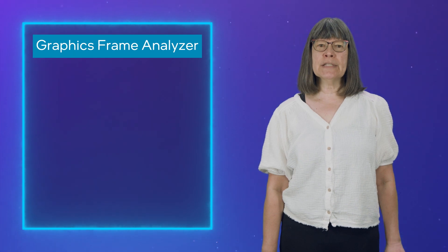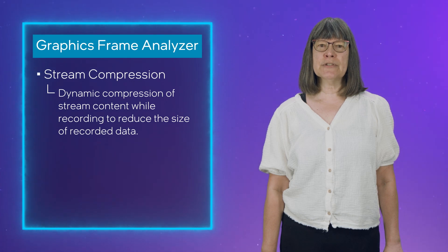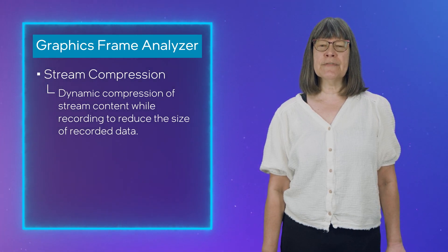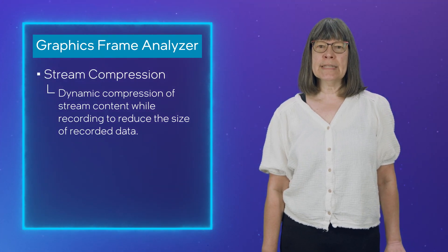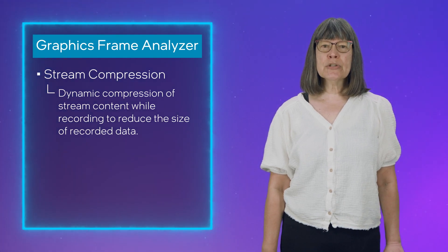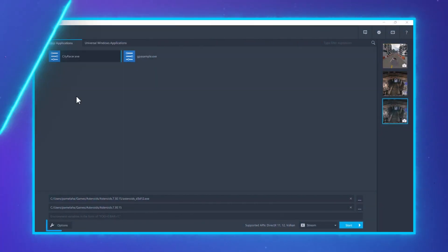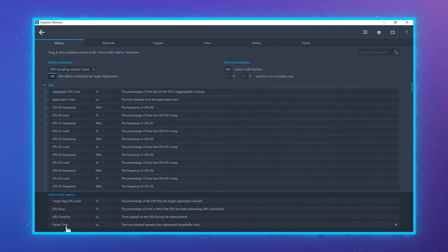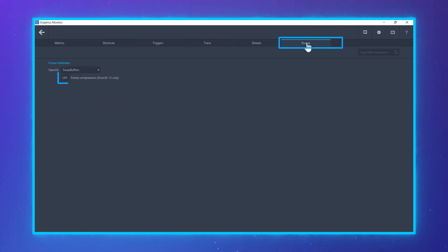For our first Graphics Frame Analyzer highlight, we have stream compression. Stream compression allows dynamic compression of stream content while recording to reduce the size of the recorded data, allowing you to save disk space. Be aware that in some cases compression during capture may reduce application frame rate, so that smaller stream size may be due in part to fewer frames captured. To invoke compression, click the Options button, then in either the Stream or the Frame tab, toggle the Compression option to the On position. This is available for DX12 and Vulkan for streams, and DX12 for single frame capture.